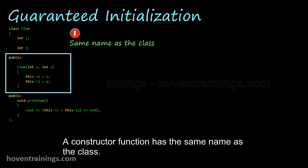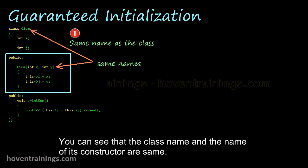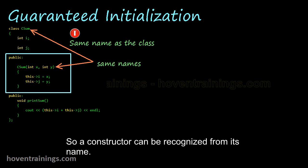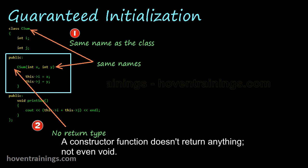A constructor function has the same name as the class. You can see that the class name and the name of its constructor are same. So a constructor can be recognized from its name. A constructor function doesn't return anything, not even void. The return type is not mentioned at all.